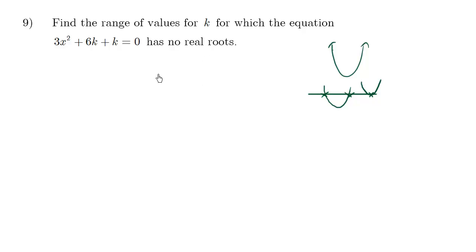So to find no real roots, we're interested in the discriminant. We're interested in b² - 4ac. Recall the quadratic formula. And we want to make this, for there to be no solutions, no real roots, we want this to be less than zero.